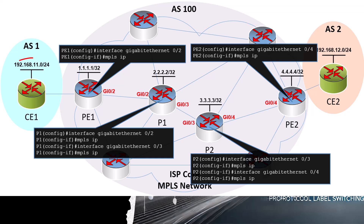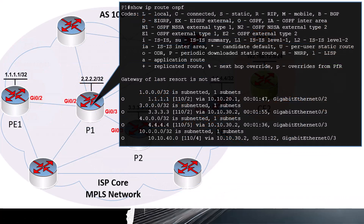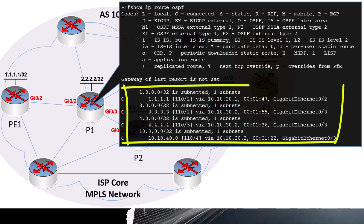If we ping from CE1's loopback address to CE2's loopback address, we will get a successful ping. Let's see what's actually happening under the hood. Looking at one of our P routers, in the IP routing table we don't see the source or destination address of that ping, and yet our ping was successful. That means we're no longer using IP routing at this point in the topology — we're using label switching, which is what we want.